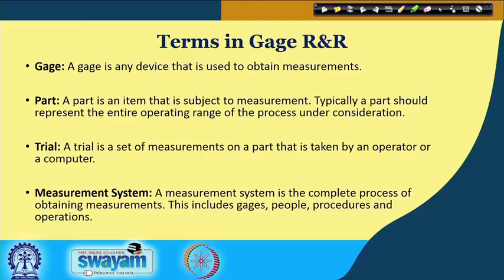There are two things: process-specific variations and instrument or gauge-specific variations. When trying to judge inherent variations in the process, I must have a very precise gauge or measuring instrument so that my quality of measurement is not affected. Some important terms in Gauge R and R: a gauge is any device used to obtain a measurement. A part is an item subject to measurement, and a part should represent the entire operating range of the process under consideration. A trial is a set of measurements on a part taken by an operator.